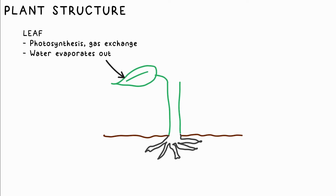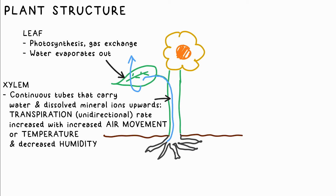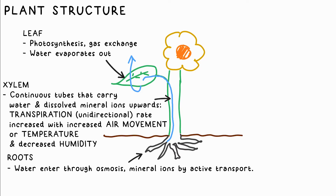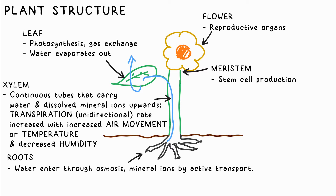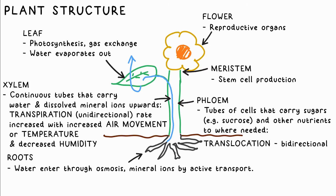Plants also have organs. Leaves are where photosynthesis takes place, producing food for the plant; water also leaves the plant through them, allowing transpiration to take place. Roots are where water and mineral ions enter the plant. The meristem is where new cells are made. Xylem are the long continuous tubes which water rises up — it's unidirectional, only going in one direction. That's transpiration.